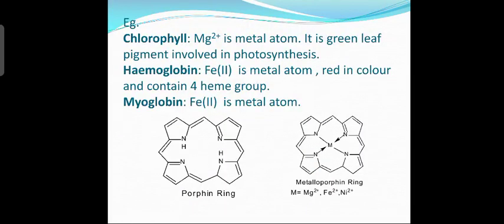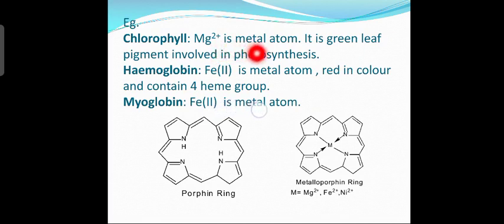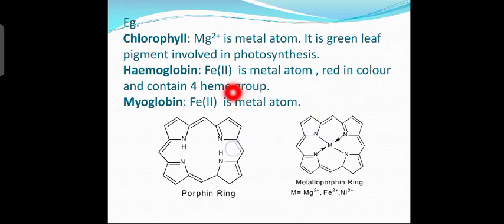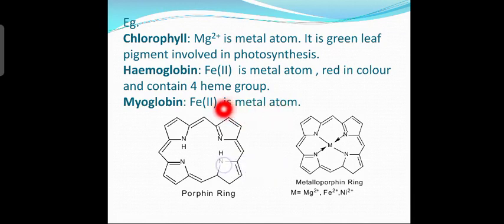There are some examples of metalloporphyrins. One is chlorophyll, which contains magnesium (Mg2+) as the metal atom. It is a green leaf pigment involved in photosynthesis. Next is hemoglobin, which contains Fe2+ as the metal atom. It is red in color and contains four heme groups. Myoglobin also contains Fe2+ as the metal atom.